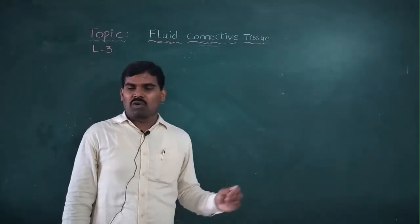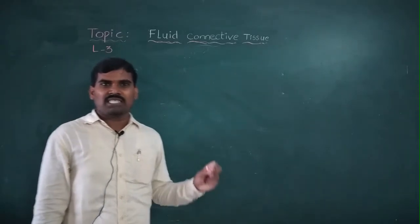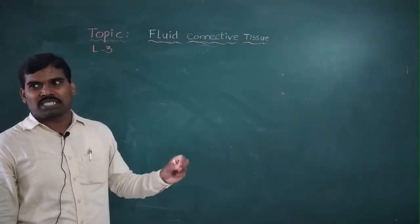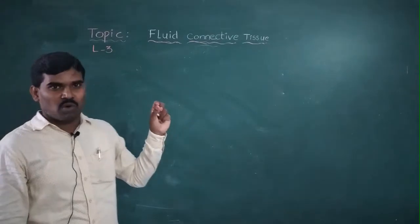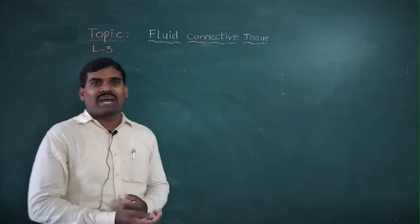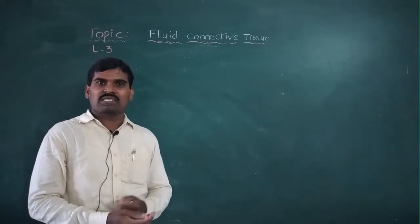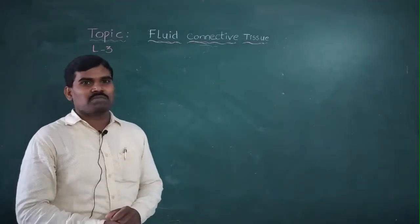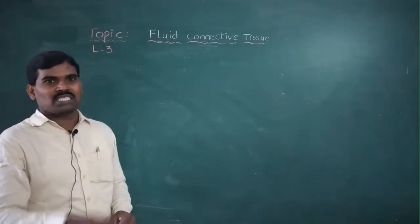Next are monocytes. The monocytes make up 5.3% of WBCs. The monocytes also have only one undivided nucleus present, without granules in the cytoplasm.